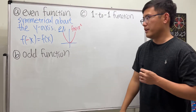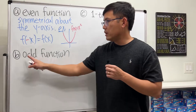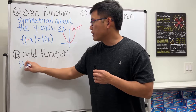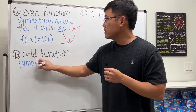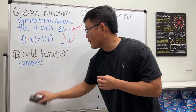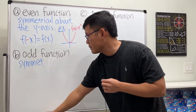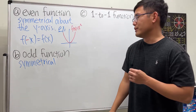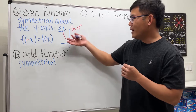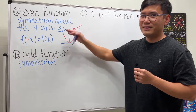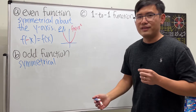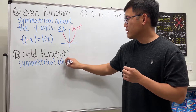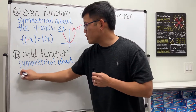Moving to odd functions — when we have an odd function, it is symmetrical, but not about the x-axis. If you have a function that's symmetrical about the x-axis, that's not an odd function. An odd function is symmetrical about the origin.